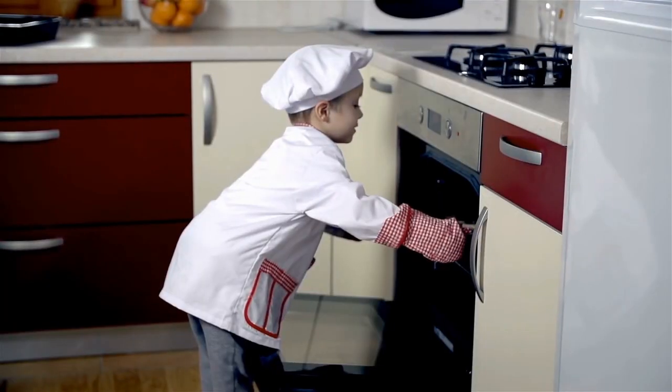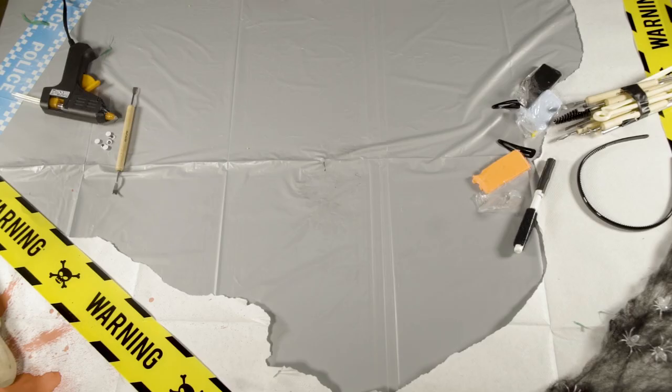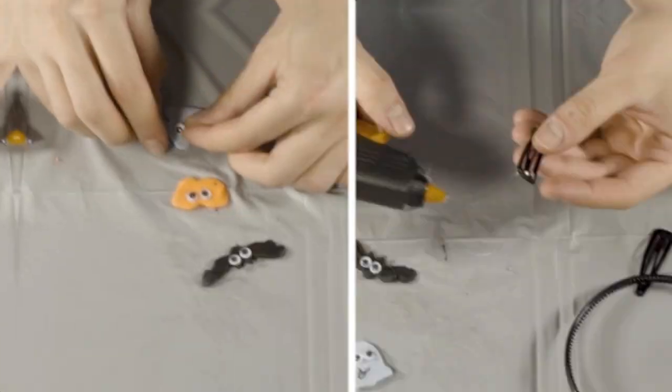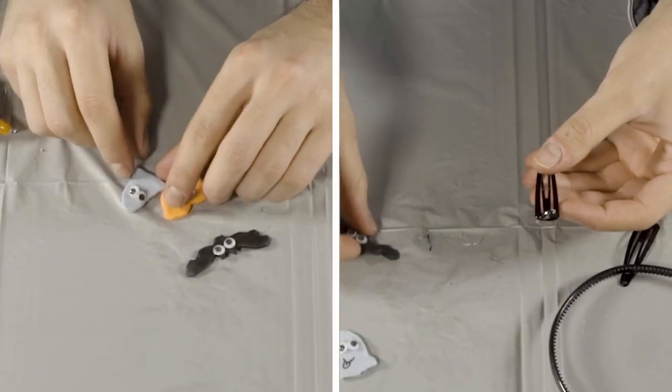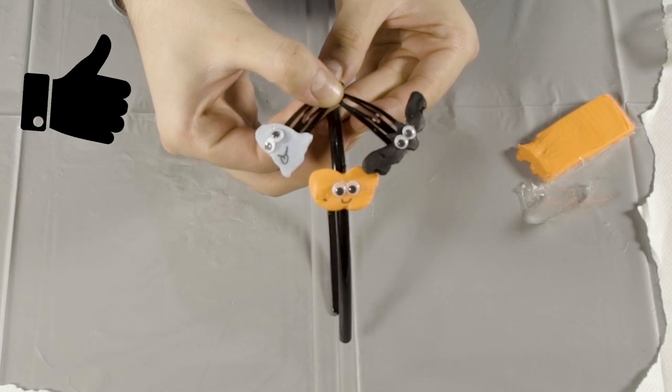Once they're done baking, let them cool. Then you can glue your pin or hair clip to the back and add googly eyes and a drawn-on smile in permanent marker to the front. Fall fashion never looked so good.